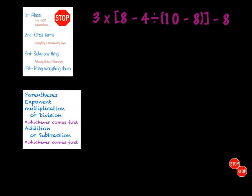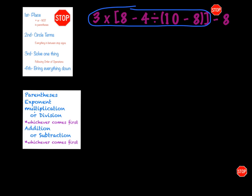In this problem, we have three times, and then in brackets: eight minus four divided by — in parentheses — ten minus eight, end parentheses, end brackets, minus eight. So again, I would place my stop signs. But in this problem, because I only have one subtraction symbol that is not inside parentheses, I'm only going to need one stop sign and circle everything else on the outside of that stop sign. I'm looking for my parentheses — the innermost parentheses I have are ten minus eight. That is what I would solve first, and I would get two, and then bring everything else down. Now that I have resolved the parentheses, I do not have to include them, but I do have to include the brackets because I still have things to solve inside the brackets.